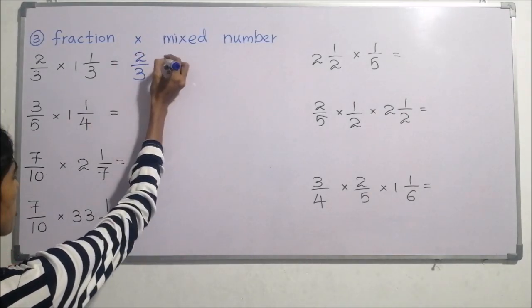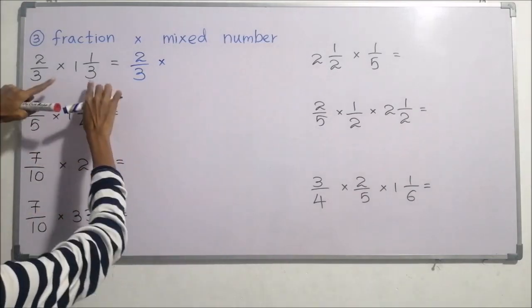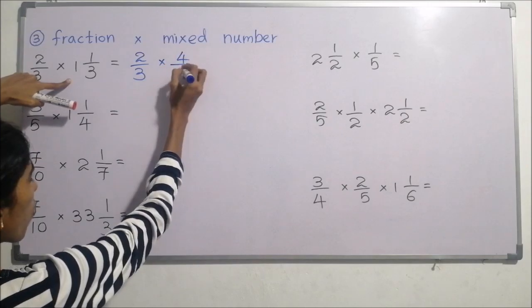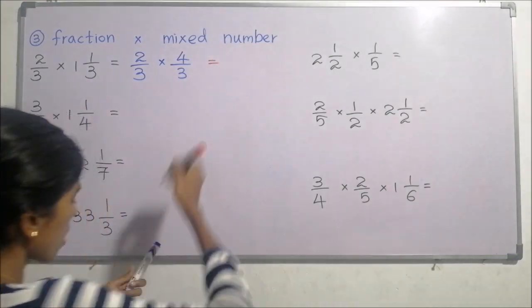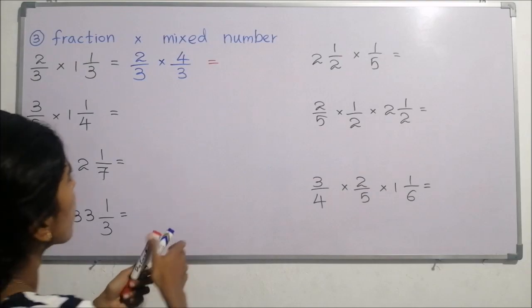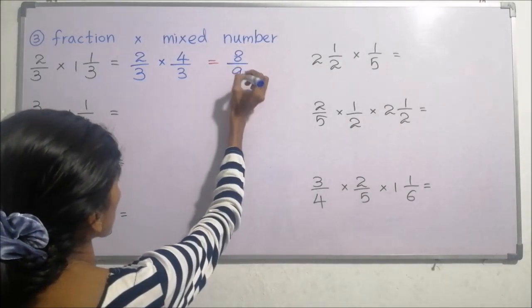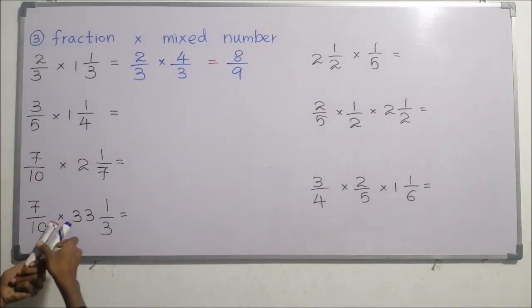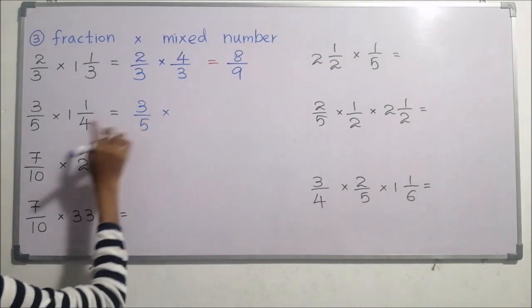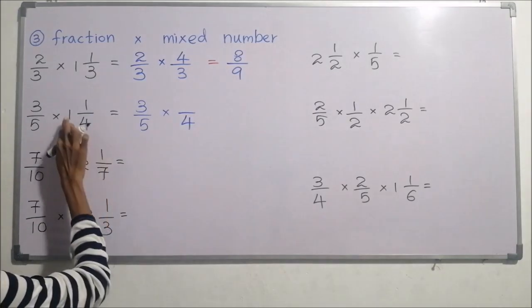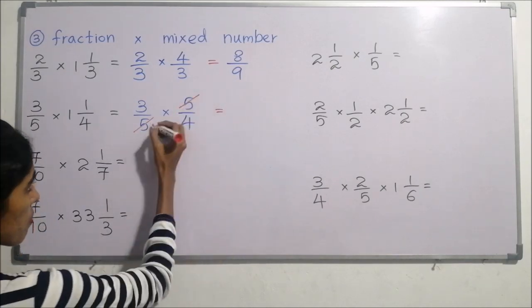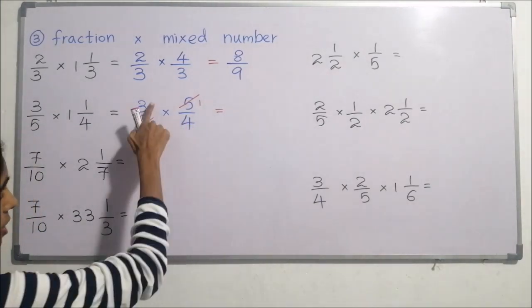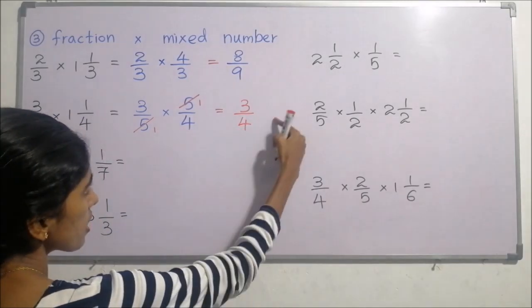Example: two thirds multiplied by one and one third. Convert the mixed number: three times one is three, plus one is four — so four over three. Now check: three and four cannot cancel, two and three cannot cancel. Multiply: two times four is eight over three times three is nine — eight ninths. Next: three fifths multiplied by one and one fourth. Convert: four times one is four, plus one is five — five over four. Five and five cancel, leaving three times one is three over four times one is four — three fourths, a proper fraction.